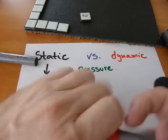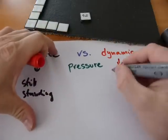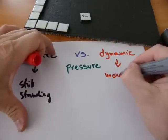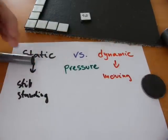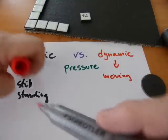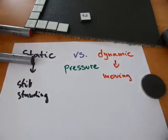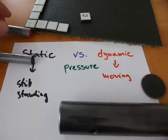What we mean by dynamic pressure is when the fluid is in motion. So it's a moving pressure, a pressure as a result of fluid moving in a piece of pipe.